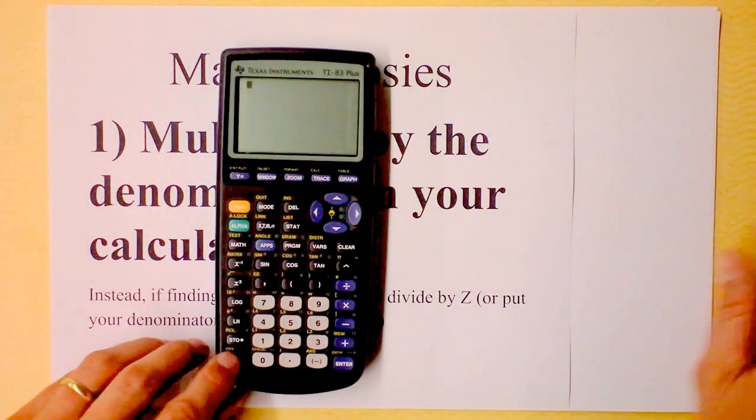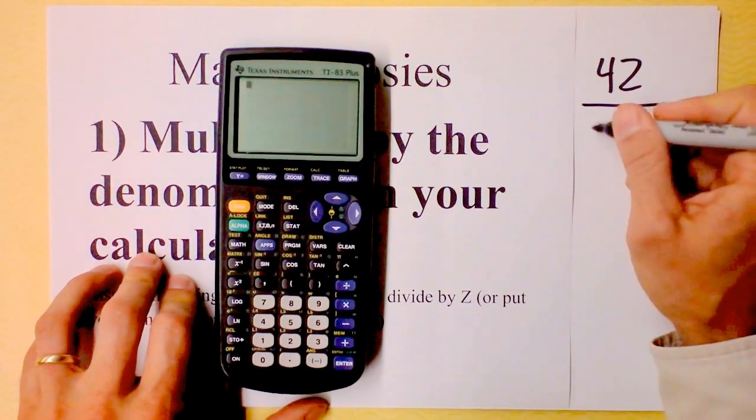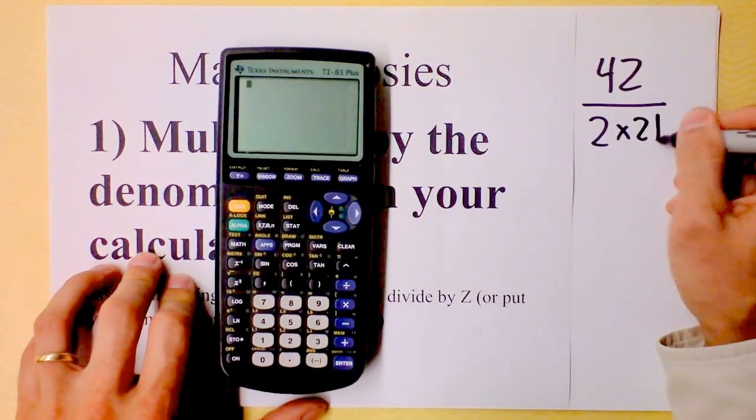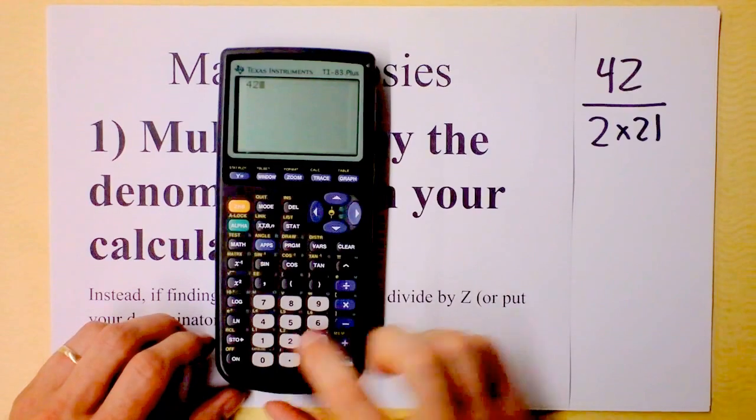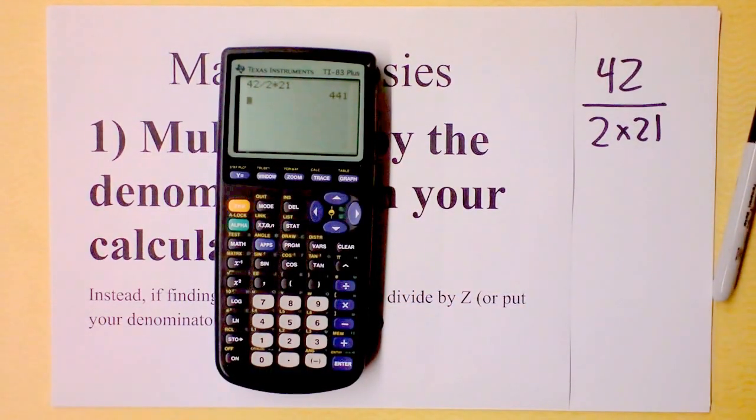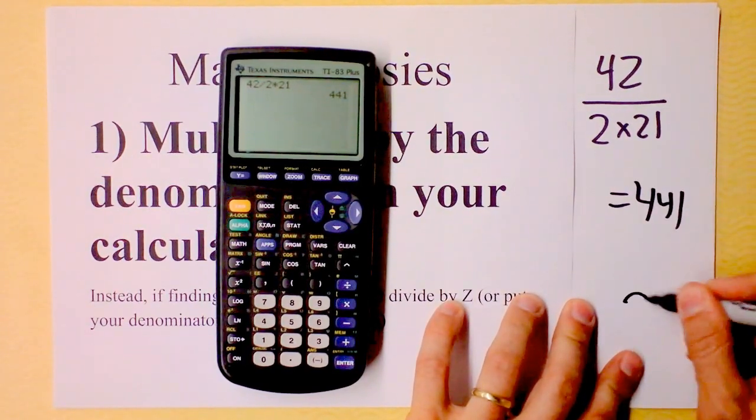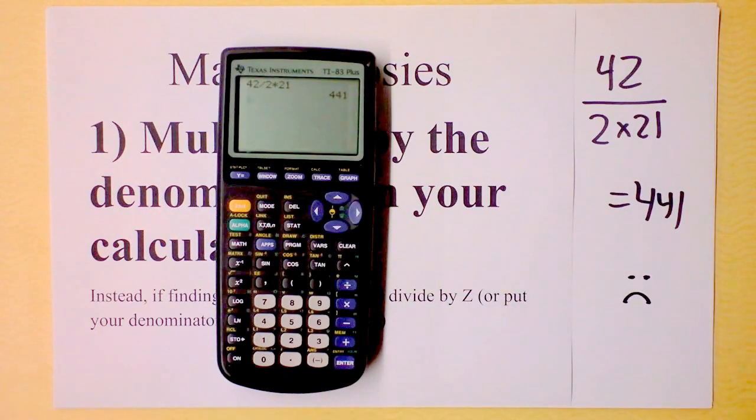Example of the problem: You want to do 42 divided by 2 times 21. You type in 42 divided by 2 times 21, hit enter and you're like, dang, 441. Should this be 441? No. You make babies cry when you write that down. Of course it's not 441.